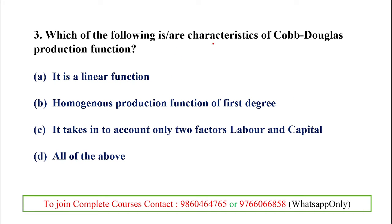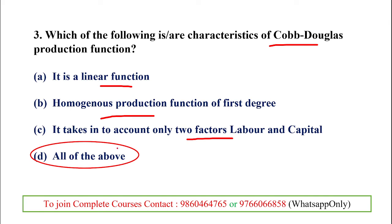Question 3: Which of the following are characteristics of the Cobb-Douglas production function? Options include: linear function, homogeneous production function of degree one, takes account of only two factors, and all of the above. The answer is all of the above. The Cobb-Douglas function is linear, is homogeneous of degree one, and uses only two factors — capital (K) and labor (L).